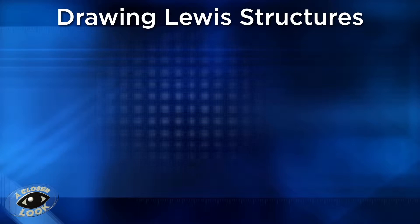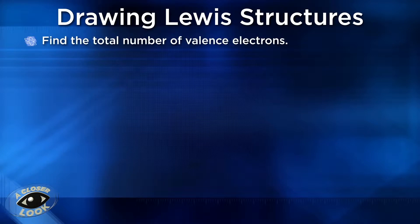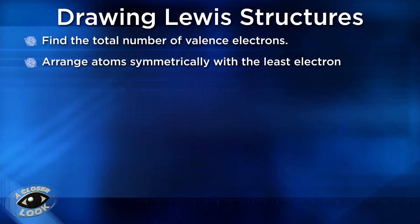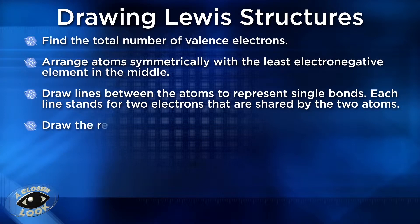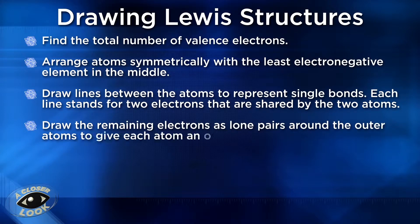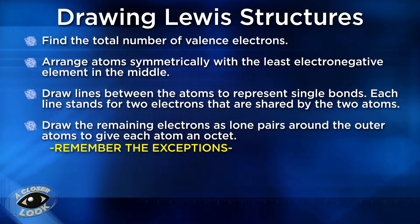Here are the steps. First, find the total number of valence electrons in the molecule by adding up the valence electrons for each element that makes up the molecule. Then arrange the atoms symmetrically with the least electronegative element in the middle. Next, draw lines between the atoms, which represent single bonds. Each line stands for the two electrons that are shared between the two atoms. Then draw the remaining electrons — the lone pairs — as dots around the outer atoms and, if needed, around the central atom.